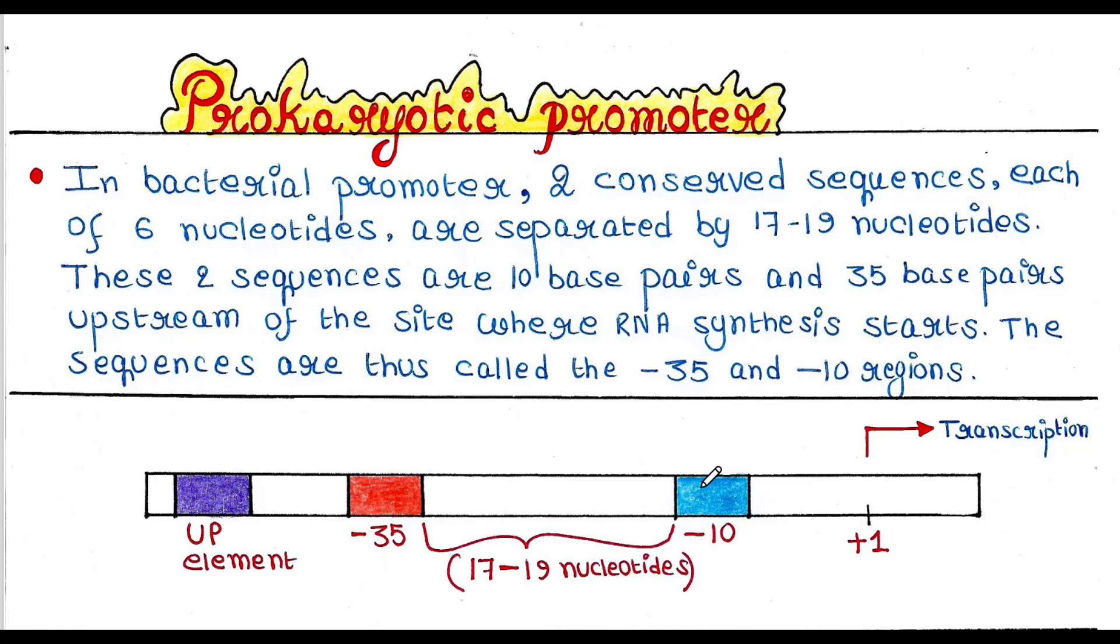The minus 10 region is 10 base pairs before this site, and the minus 35 region is 35 base pairs before this site. Hence the sequences are called the minus 35 and minus 10 regions.